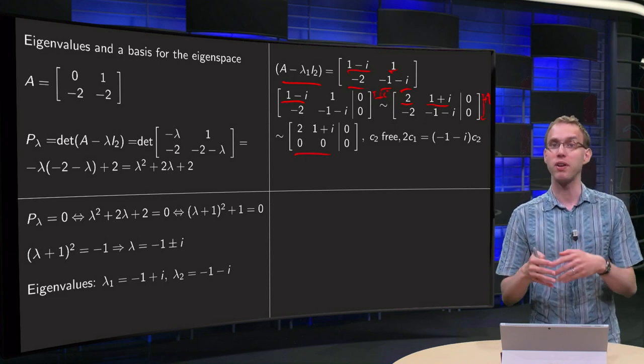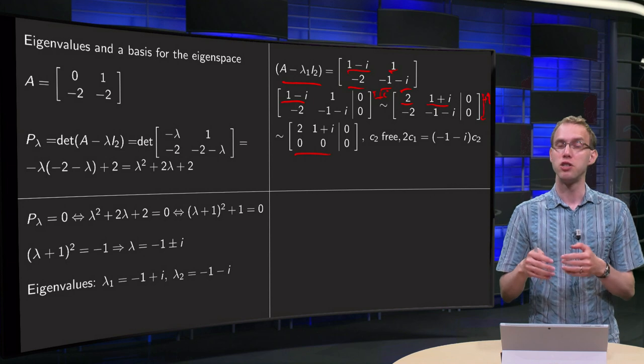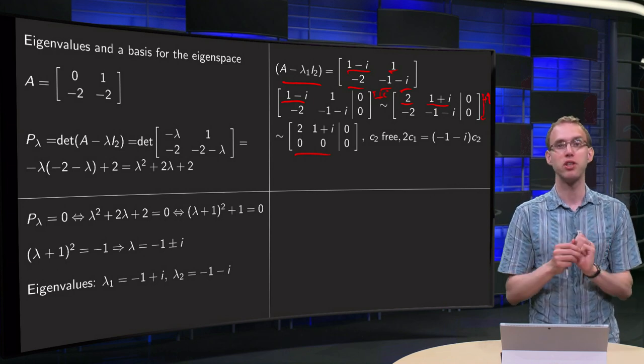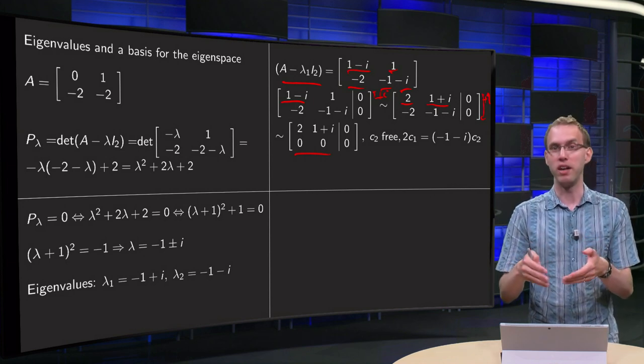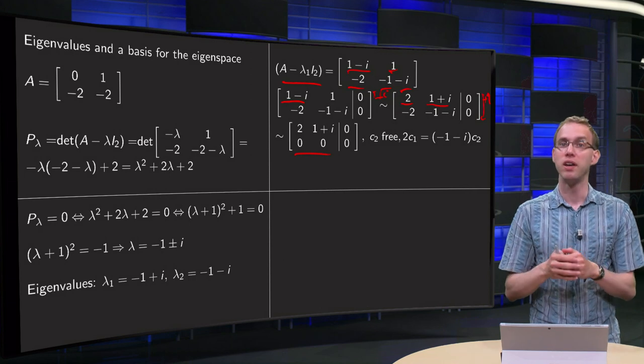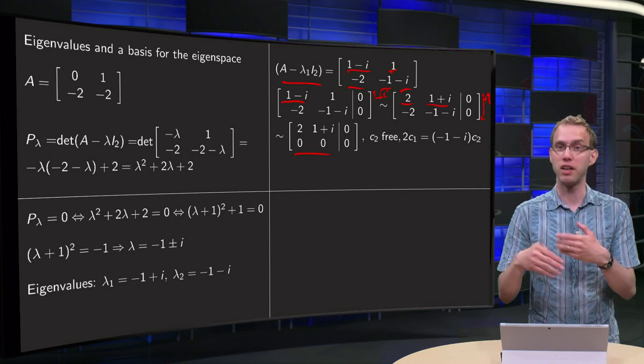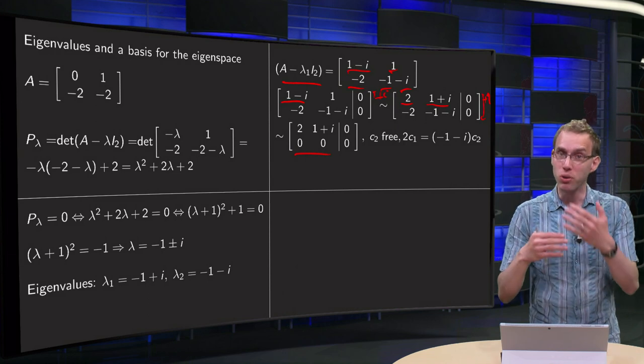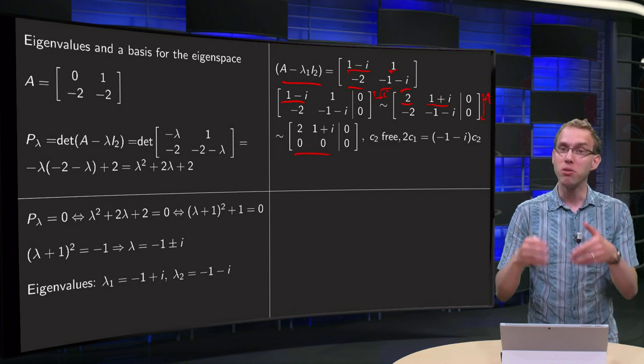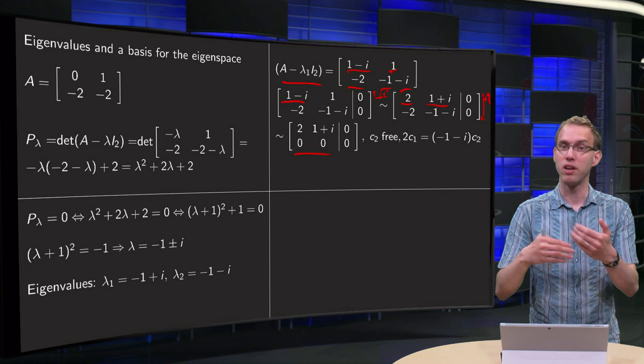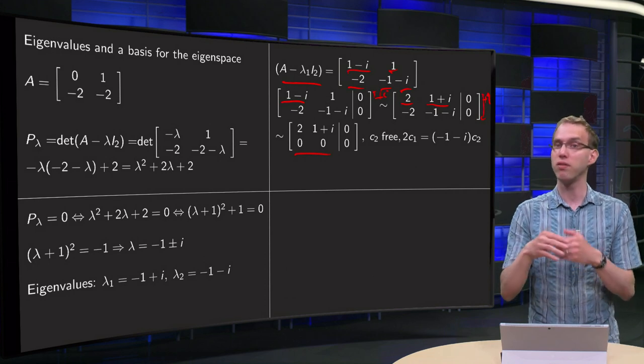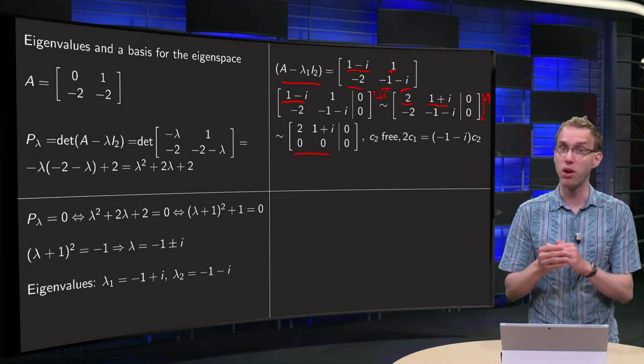But always do this row reduction step, because it helps you to check whether all your computations were correct. Suppose you have the eigenvalues incorrect, and you come here and just erase a row, then you also have the eigenvectors incorrect and it gets worse. Always do the row reduction step because it's a nice check.